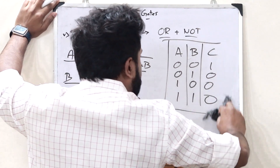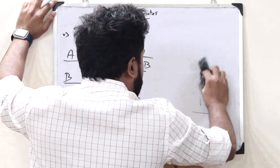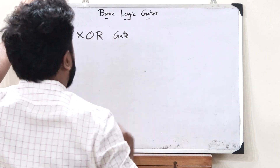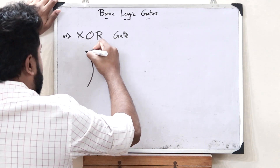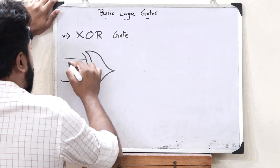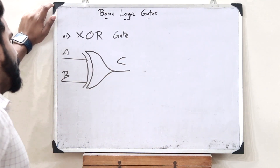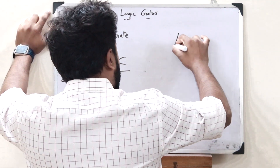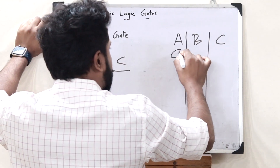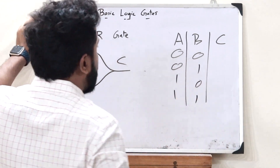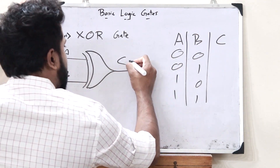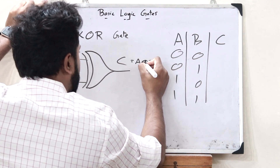Finally, we have another gate referred to as the exclusive OR gate or XOR gate. The exclusive OR gate is represented like this — it would have two inputs A and B and an output C. This is basically the same operation as an OR gate, but with a slight difference. The output is C is equal to A exclusive OR B. We have four input conditions: 0-0, 0-1, 1-0, and 1-1.